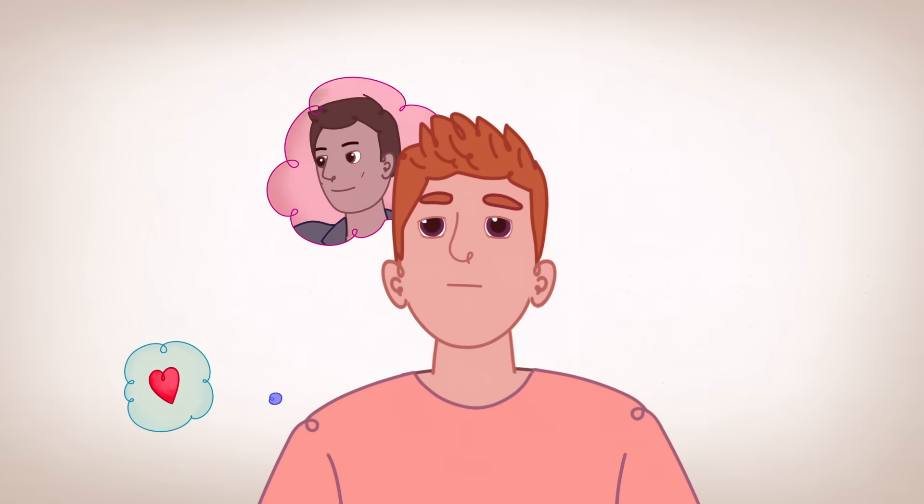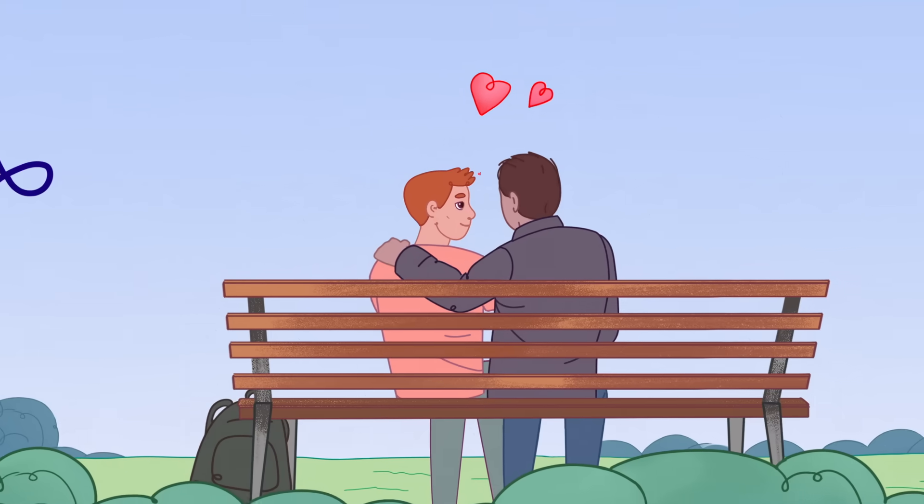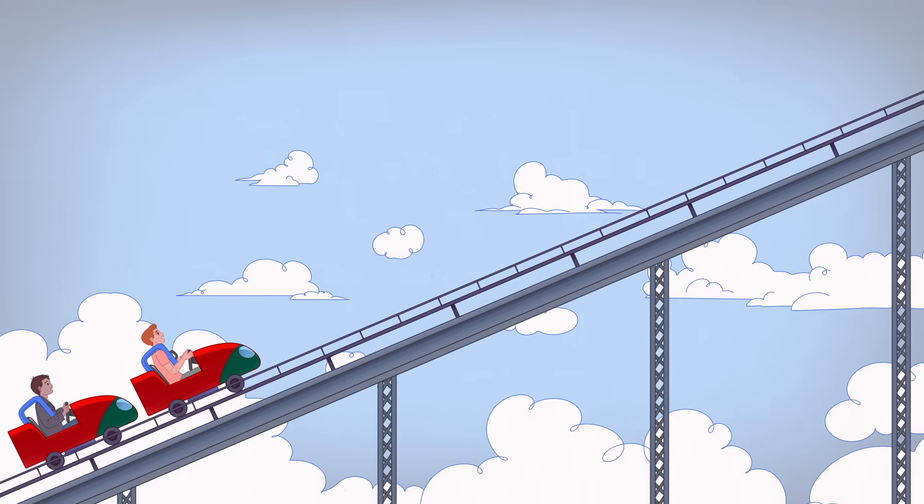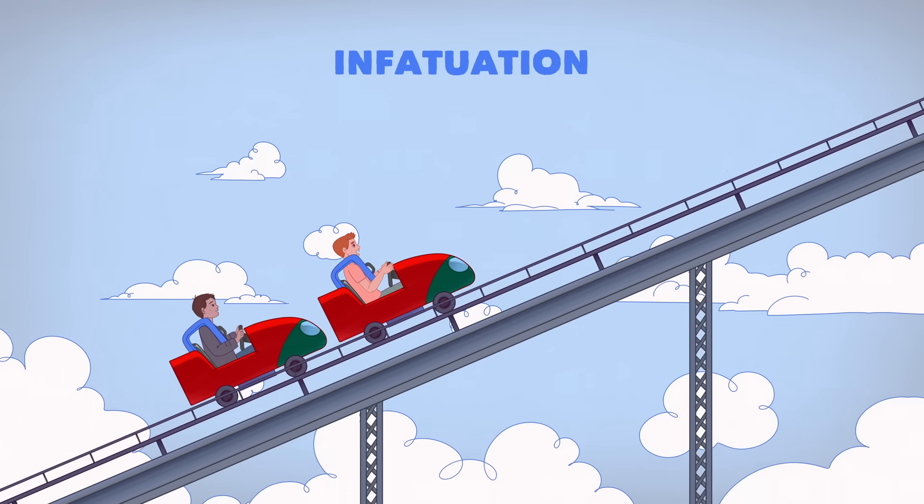As you begin to fall for someone, you may find yourself excessively daydreaming about them and wanting to spend more and more time together. This first stage of love is what psychologists call infatuation, or passionate love.